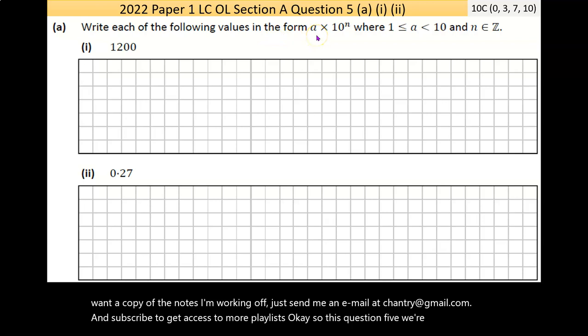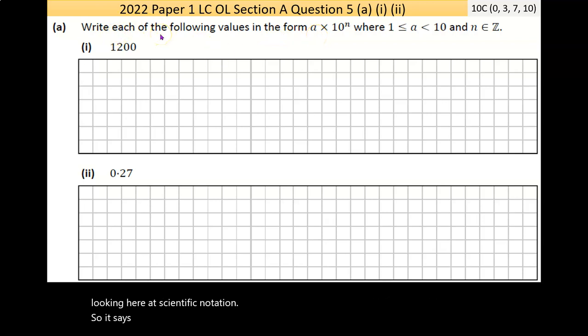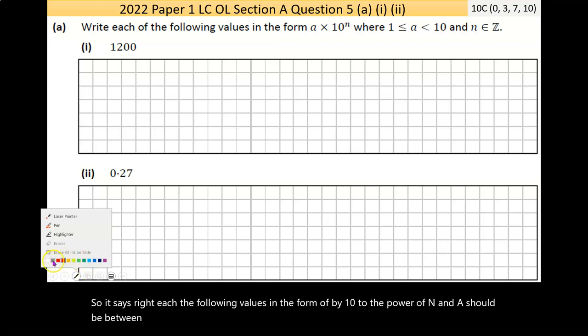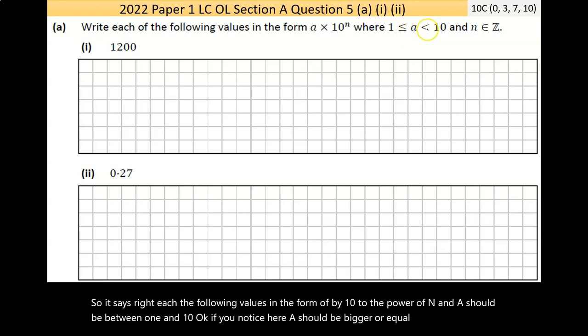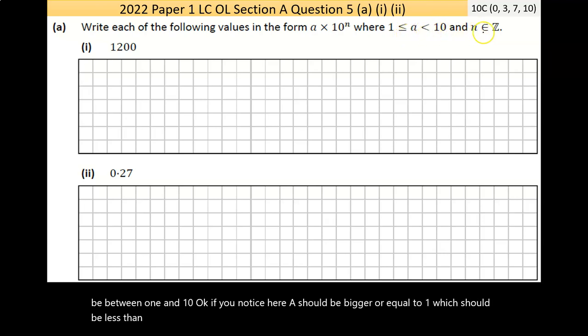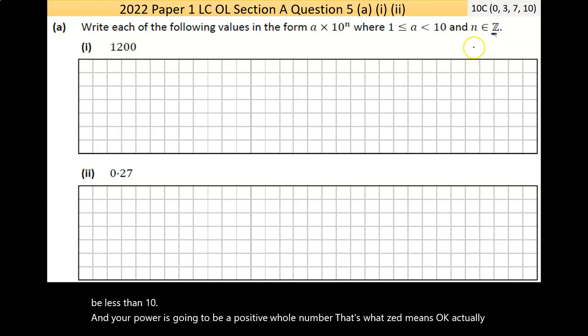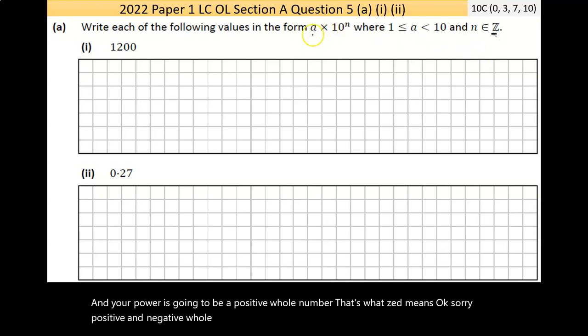This question five, we're looking here at scientific notation. So it says write each of the following values in the form a × 10^n and a should be between 1 and 10. If you notice here, a should be bigger than or equal to 1, which should be less than 10, and your power is going to be a positive or negative whole number. So this a must be between 1 and 9.999, and this n should be a whole number.